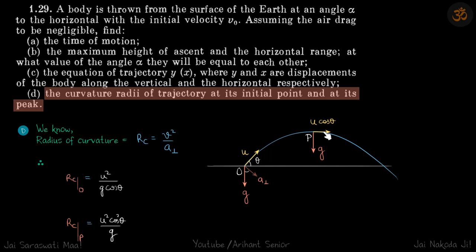Now the topmost point horizontal velocity is u cos theta, and the acceleration downwards is g. So already velocity and acceleration are perpendicular to each other. So we just put the values. So at p radius of curvature is u square cos square theta divided by g. These are our answers.